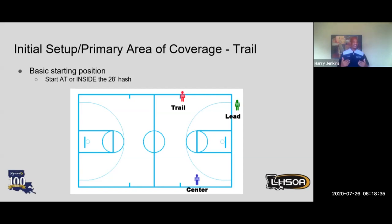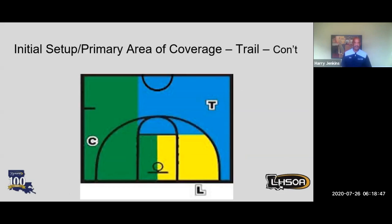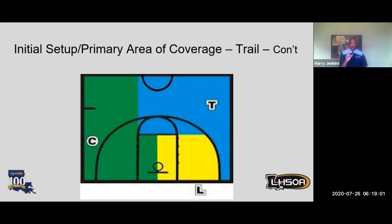The basic starting position for trail is at or inside the 28-foot mark. Every position has a primary coverage and we need to know all positions because you're not going to be married to trail for the duration of the game. As you can see, trail is in the blue area. Trail is responsible for the nearest sideline and the division line.